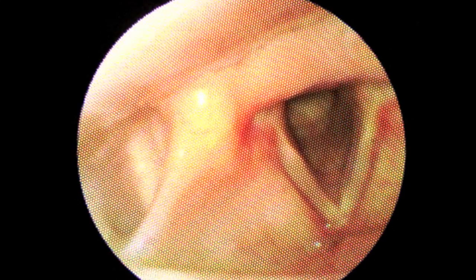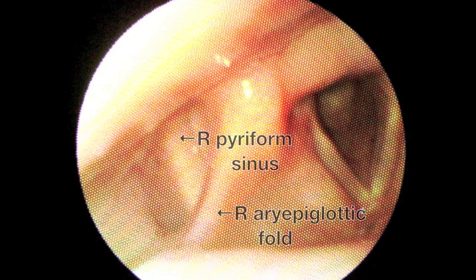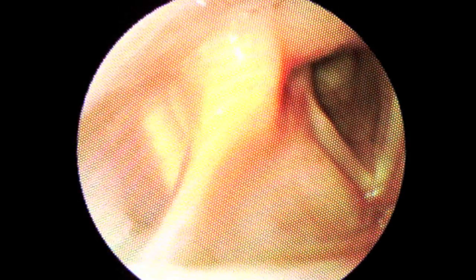By shifting the scope from one side to the other, you can take a closer look at the piriform sinuses and the aryepiglottic folds.